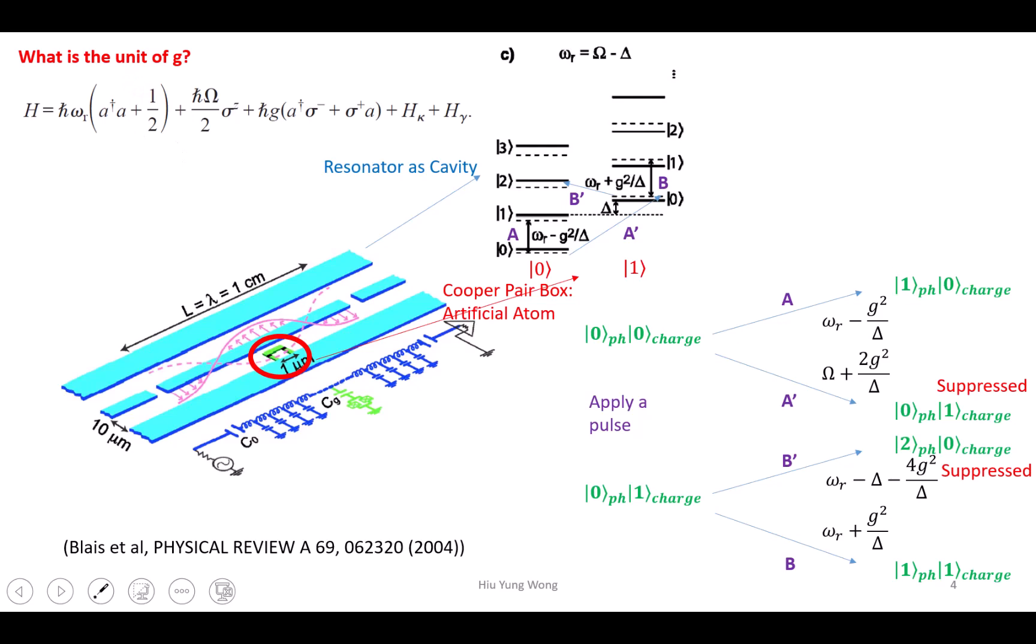I should have been able to answer you on the spot. First of all, we talked about there is a cross curve which is g squared divided by delta. It is saying that your cavity has the resonant frequency omega_r, and because of the qubit you change the resonance frequency of the cavity. If your qubit is in the zero state, you reduce it by g squared divided by delta. If your qubit is in the one state, you increase by g squared divided by delta. So what is the unit of omega?